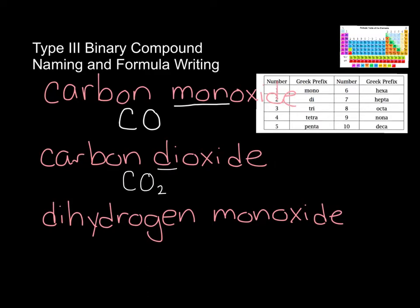The next one is one of my favorite molecules — I couldn't live without this one. Dihydrogen monoxide. We have a prefix in front of our first element, which tells us we have multiple of that element present. Di means two, so H2. Then looking at our second element, mono means one oxygen. So dihydrogen monoxide is H2O.